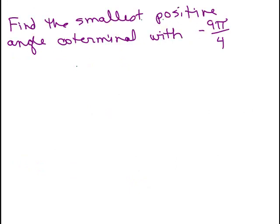Alright, here's our next problem. Find the smallest positive angle coterminal with negative 9π/4. So we start with negative 9π/4.